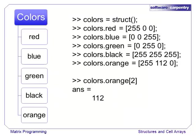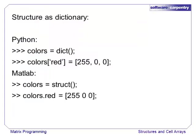Structures store data in a hierarchy. In this example, we store an array that contains the intensity values of the three primary colors — red, green, and blue — that are required to make one of several different colors. We can see that the array for orange is accessed by the key colors.orange. If you are familiar with dictionaries in another language, this should look familiar. For instance, in Python, we can recreate colors as a dictionary. Each key is a string and each value is an array with three elements.